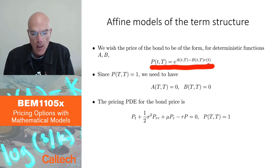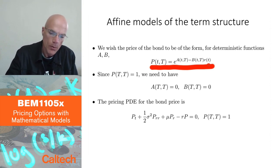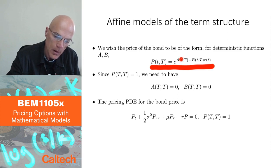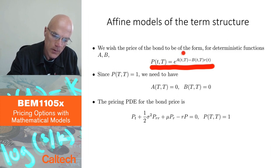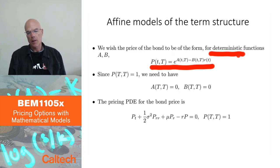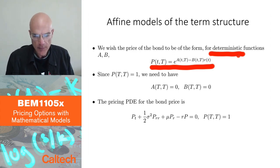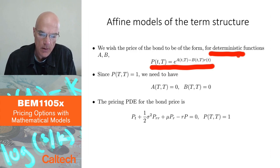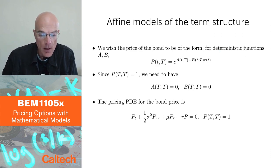The coefficients in the linear function are not random, but they are deterministic functions of time — today, small t — and maturity. So for bonds with different maturities, you might get different coefficients A and B. A and B are deterministic functions of time and maturity, and we are hoping that the form is exactly of this exponential type.